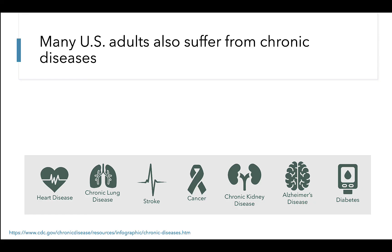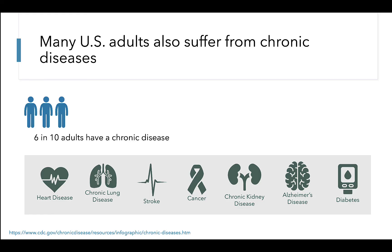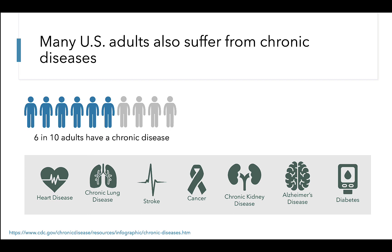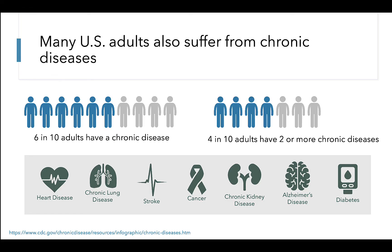Now we know obesity increases risk for metabolic and other chronic diseases, such as heart disease, chronic lung disease, stroke, cancer, chronic kidney disease, Alzheimer's disease, and diabetes. We've seen increases in the prevalence of these chronic conditions over the past few decades, and these echo the increases we've seen in BMI and obesity prevalence. In particular, the most recent data illustrate that 6 in 10 adults have at least one of these chronic diseases, and 4 in 10 adults have two or more of these chronic diseases.